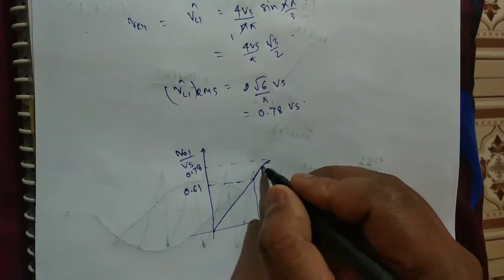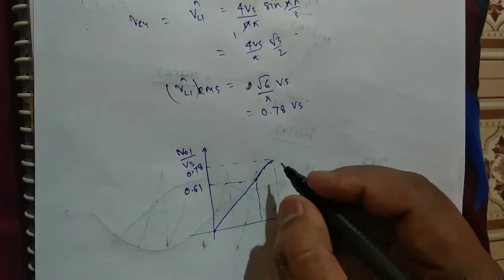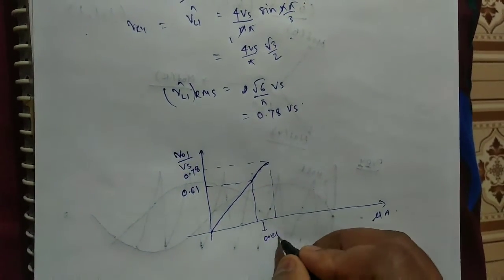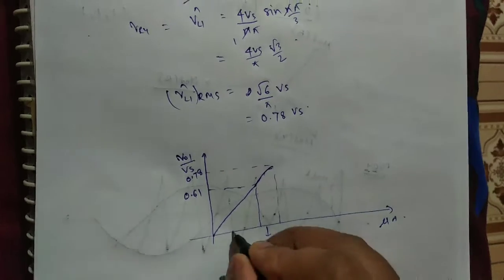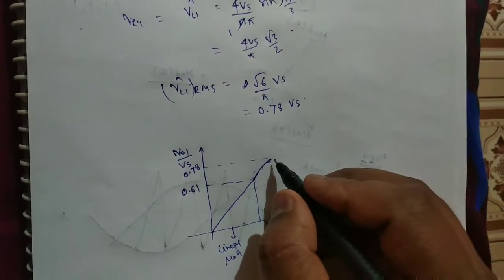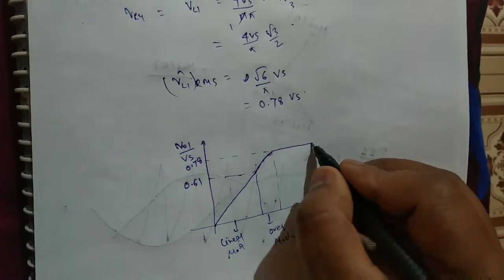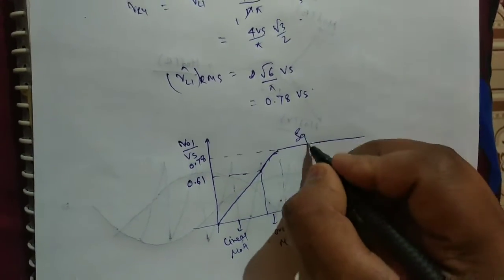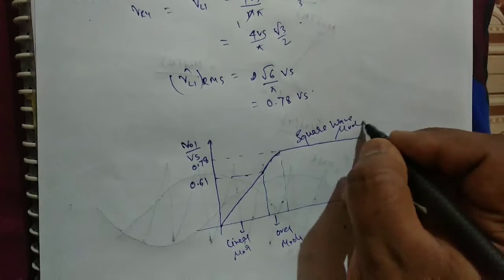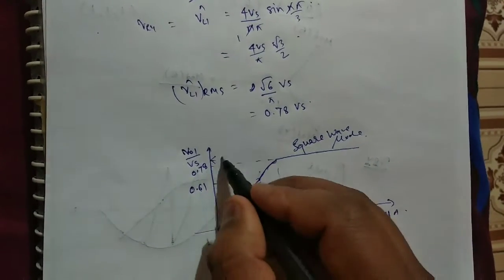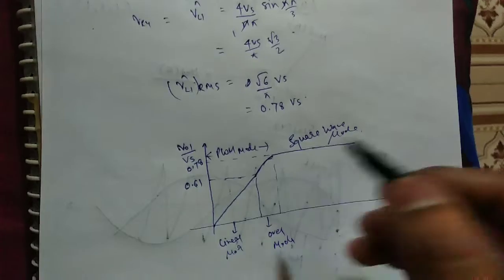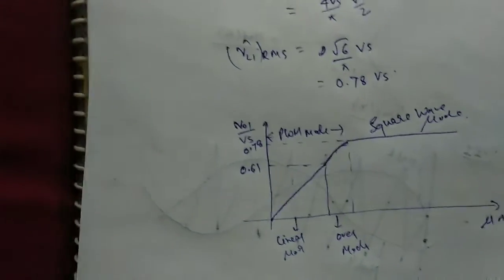And up to 0.78, over-modulation will be there. 0.61 to 0.78, over-modulation will be there in this region. And here linear modulation. After this 0.78, square wave mode is preferable. 0.61 up to this region PWM mode, and after this square wave mode is used.